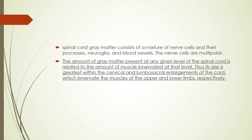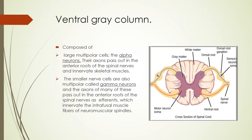The amount of gray matter at a particular level can be correlated with the mass of tissue to be supplied. It is greatest within the cervical and lumbosacral enlargements of the cord, where brachial and lumbosacral plexuses supply the limbs and innervate the muscles of the upper and lower limbs. So the amount of gray matter is maximum in the cervical and lumbosacral enlargements.